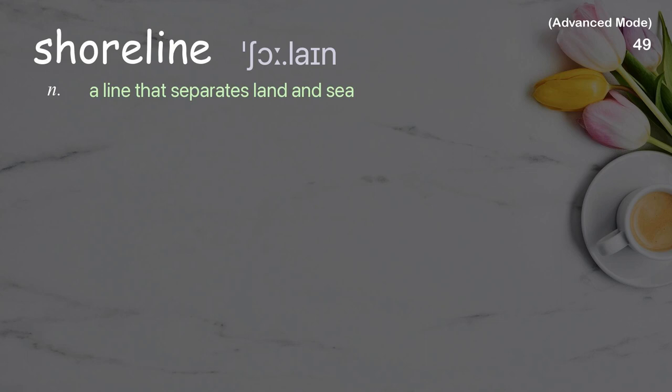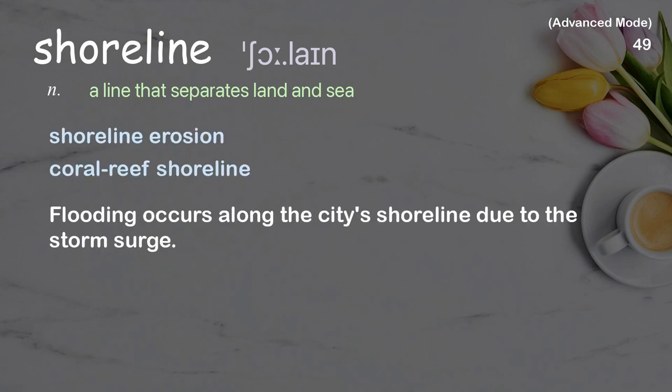Shoreline: a line that separates land and sea. Examples: shoreline erosion, coral reef shoreline. Flooding occurs along the city shoreline due to the storm surge.